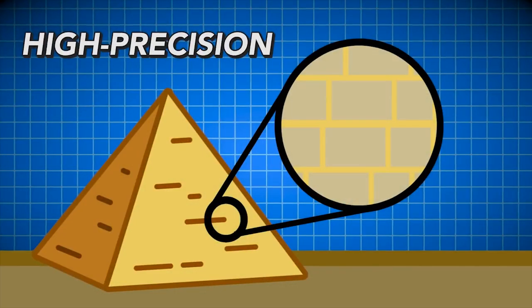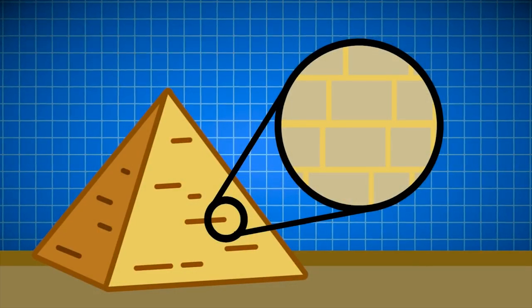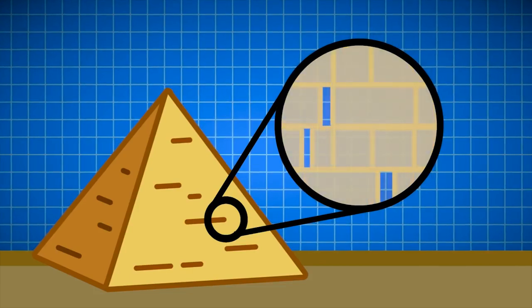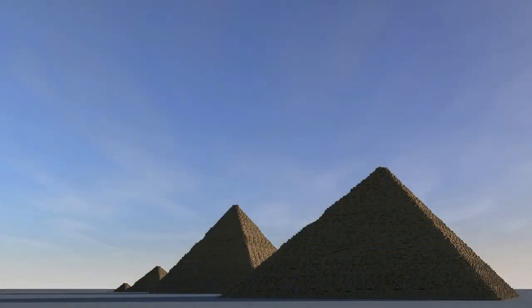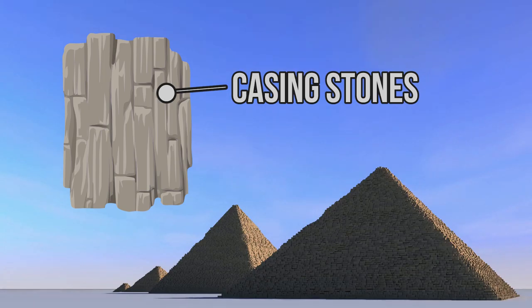Large limestone blocks were used to create the core of the structure, which is what can be seen of the pyramid today. The original pyramid would have been faced with encasing stones to create a smooth, glossy exterior finish.